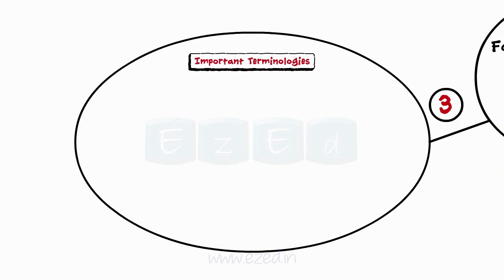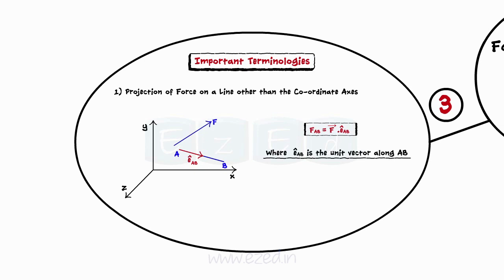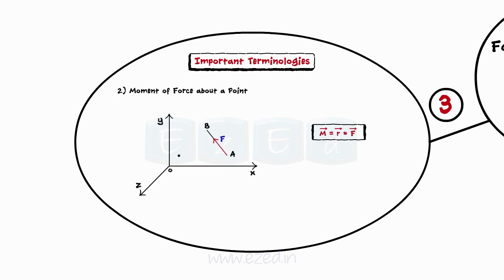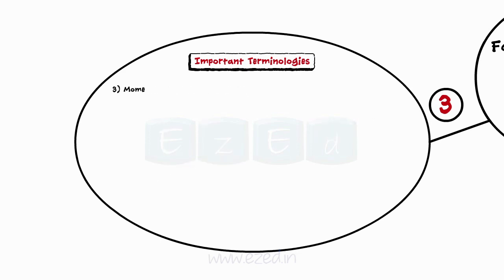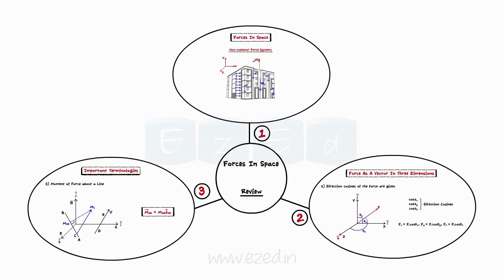Next, we learnt about important terminologies used to study force systems in space. We learnt the method to find the projection of a force on a line other than the coordinate axis: FAB equals F-bar dot E_AB-hat, where E_AB-hat is the unit vector along AB. We also learnt the method to find the moment of a force about a point — a vector expressed as R-bar cross F-bar. Then, we learnt the method to find the moment of a force about a line, calculated by finding the moment magnitude and multiplying by the unit vector along the line.